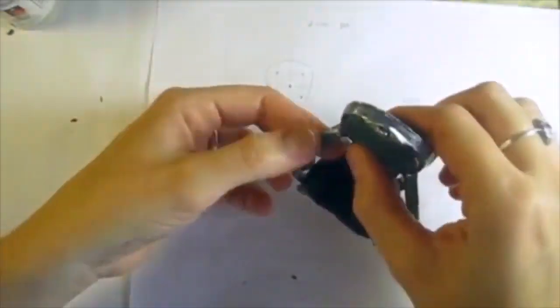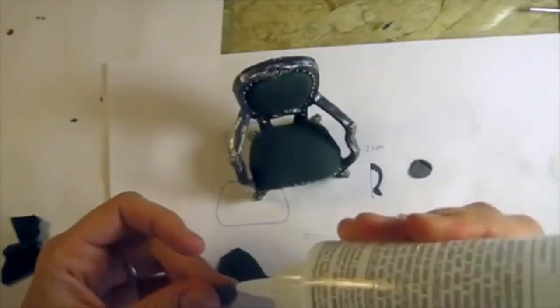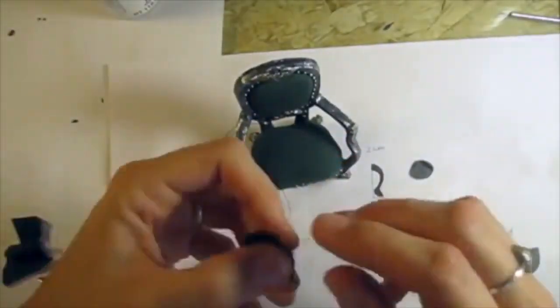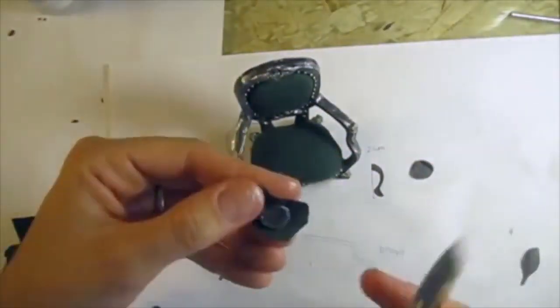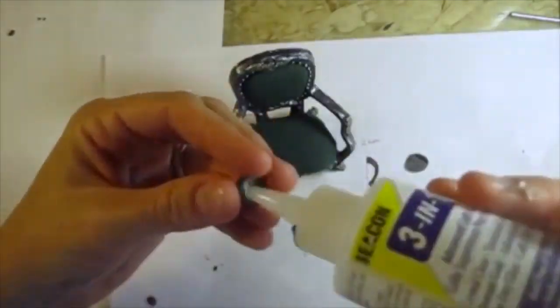To make the arm rest, you can make little balls out of clay. Press them to the arm to copy its shape, cover it with fabric and glue it to the arm.